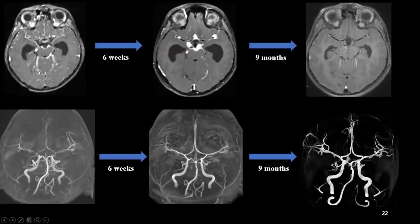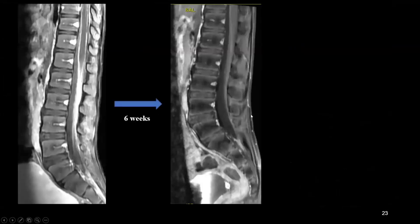On follow-up imaging, the leptomeningeal exudates clump together and are grouped in the optic chiasmatic area and the pre-pontine cistern. The spasm has resolved. When we report this kind of spasm and leptomeningeal disease, the patient is started on ATT along with corticosteroids — that is mandatory to prevent further infarcts. At nine months follow-up, the leptomeningeal process has resolved, the vessels have returned to completely normal, and the arachnoiditis on spine imaging has resolved completely with no enhancement of the cauda equina nerve roots.